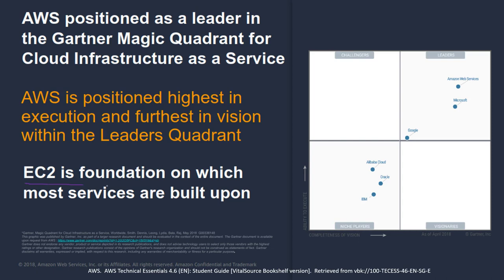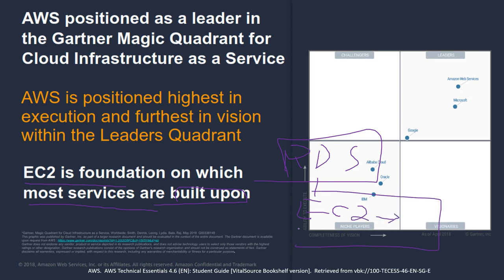EC2 is the foundation on which most AWS services are built. All other services can be thought of as customized EC2 instances — for example, RDS is a customized EC2 instance configured for databases only. AWS provides the most powerful EC2 instances, more powerful than Microsoft Azure and Google Cloud. That is why AWS is still the leader among cloud providers.